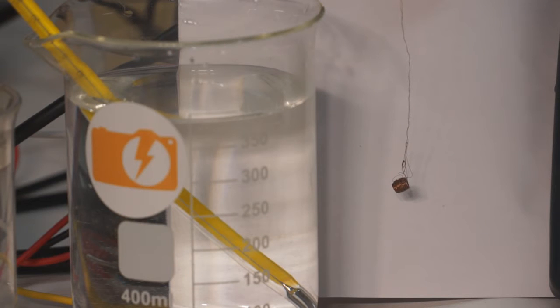I started by winding some thin copper wire into a coil. I chose thin wire so that it would have a low thermal mass and a high initial resistance.